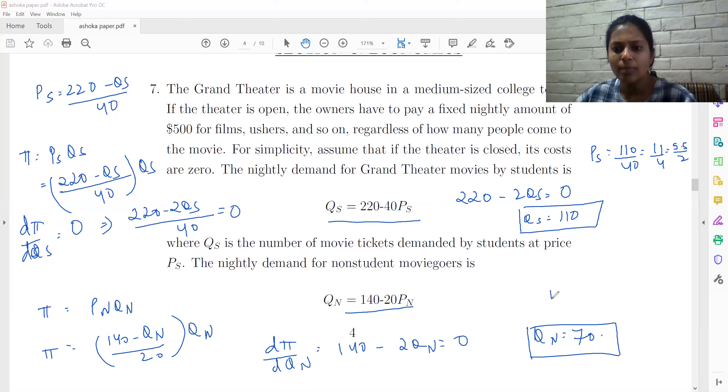And PN is going to be 140 minus 70 by 20, which is going to be 70 by 20, which is going to be 7 by 2. So 7 by 2 and 5.5 by 2. So we can see that the price charged to students is 5.5 by 2 and the price charged to non-students is 7 by 2.